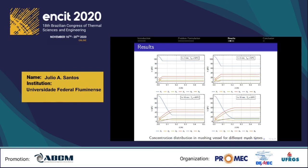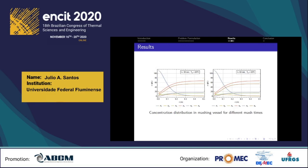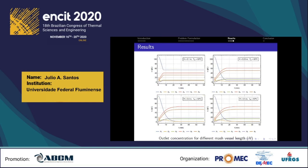At the same time that starch is transported by advection, it is consumed by the action of enzymes and converted. The concentration of carbohydrates, on the other hand, increases outside the influence zone of advective transport, as starch is being converted into carbohydrates. The next figure displays outlet concentrations for different vessel lengths. For shorter vessel lengths, although initially the concentration of fermentable sugars increases as starch conversion occurs, the effect of advective transport is felt earlier at the outlet, and the concentration of species becomes constant over time. For longer vessels, advective transport takes longer to affect the vessel outlet, allowing higher conversion rates by the enzymes.